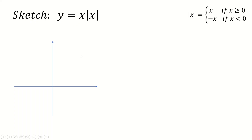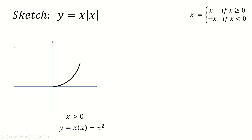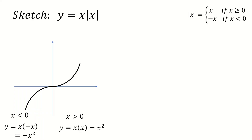This is really helpful for sketching. For example, let's sketch x mod x. Over here in our graph, where x is greater than 0, this graph is just x times x, because the mod function doesn't do anything — that's just x squared, which is a curve. We only care about the right-hand side where x is greater than 0. And over here where x is less than 0, the mod function gives minus x, so the graph is y equals x times minus x, which is minus x squared — an upside-down curve — but again we only care about that region.